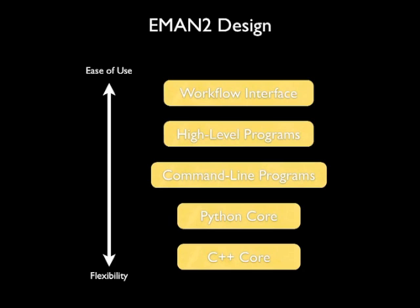Below that is the Python core. EMEN2 is built on top of the concept of scripted programming. While the main image processing library in EMEN2 is written in C++, that C++ core is wrapped into a programming language called Python, which is a scripting language — it doesn't have to be compiled or anything like that. All of the end user programs in EMEN2, including the GUI programs, are written in Python rather than C++. The C++ code handles very low-level image processing routines which need to be very fast.